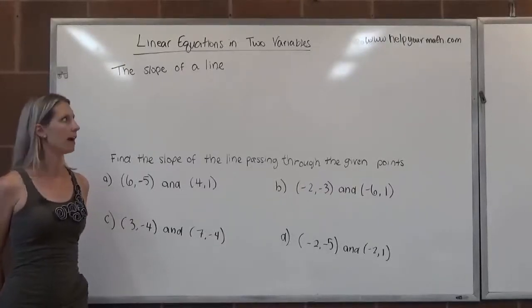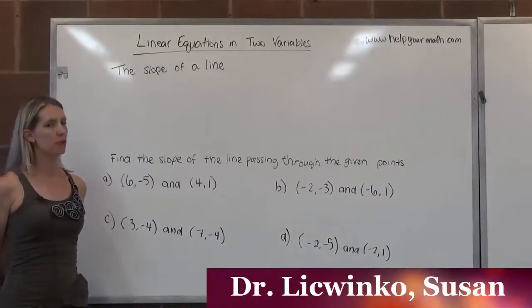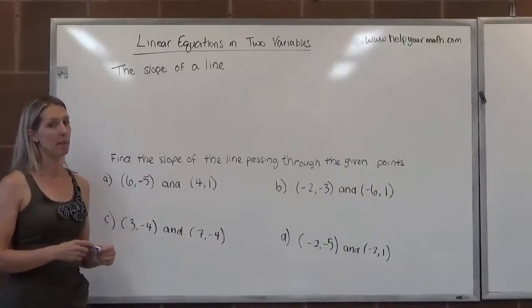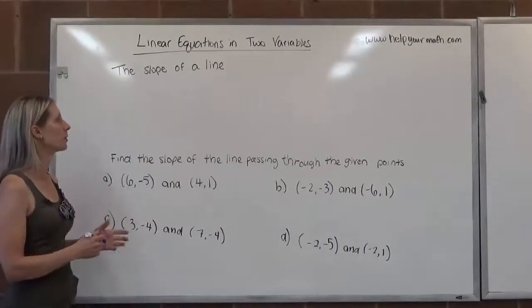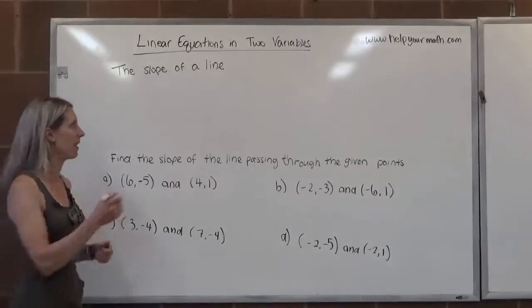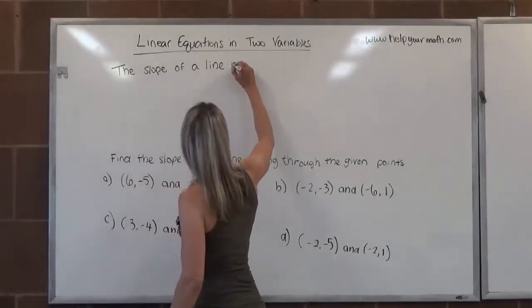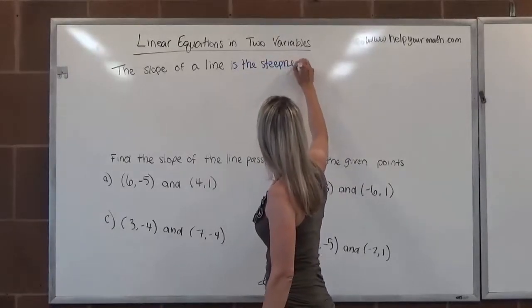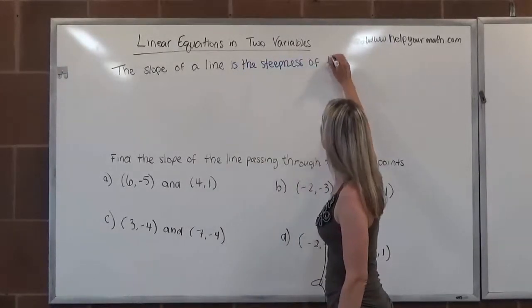In this video, we're going to talk about the slope of a line. The slope of a line - lines are unique in that they always increase or decrease by the same amount, and that same amount is called the slope. So the slope of a line is the steepness of that line.